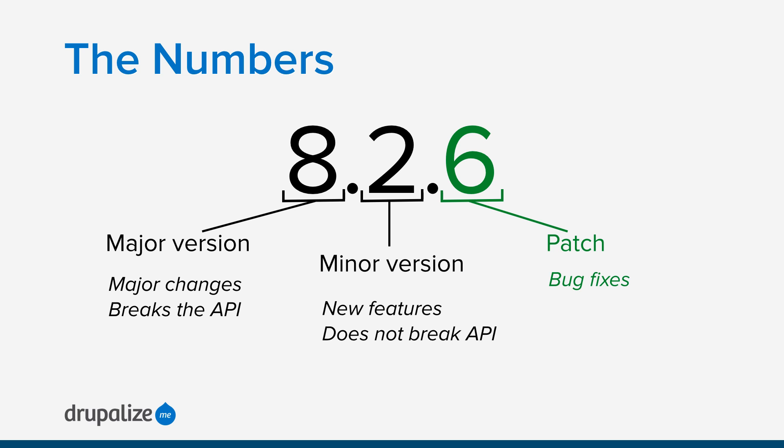The last number, this third number, is the patch number, which is meant for bug fixes. Every time we do security updates or fix bugs, that just gets a patch number, and that should never break backwards compatibility. If you need to break backwards compatibility to fix those bugs, then you're going to have to increment to a whole new major version number.